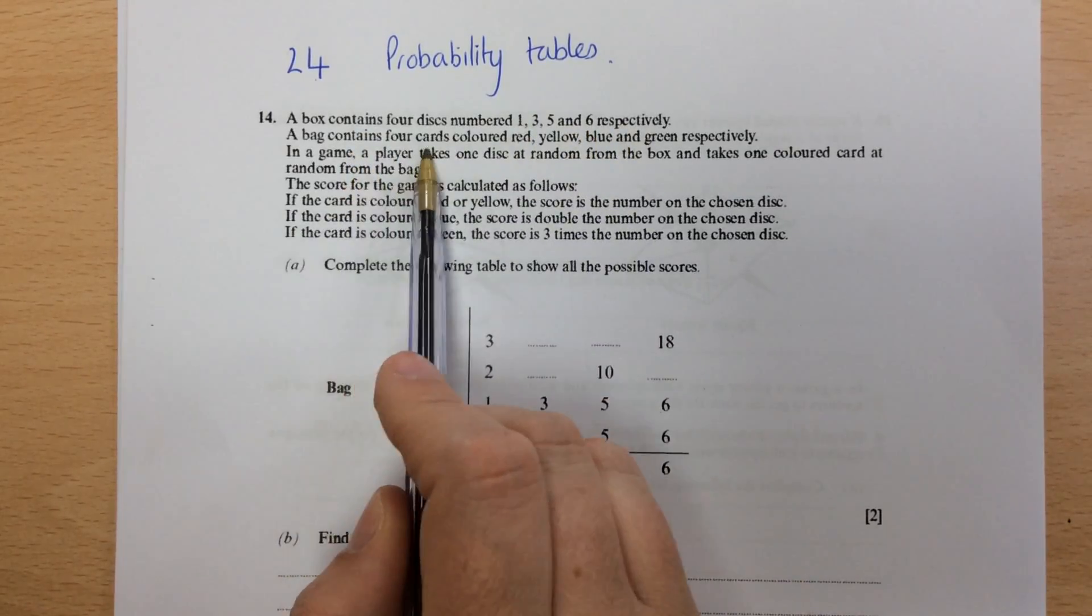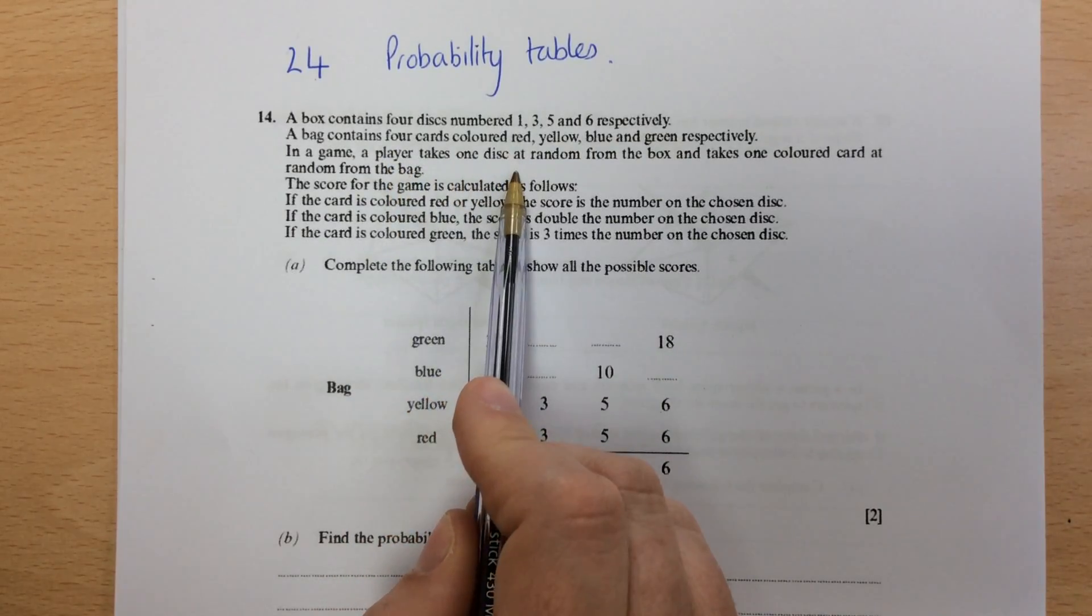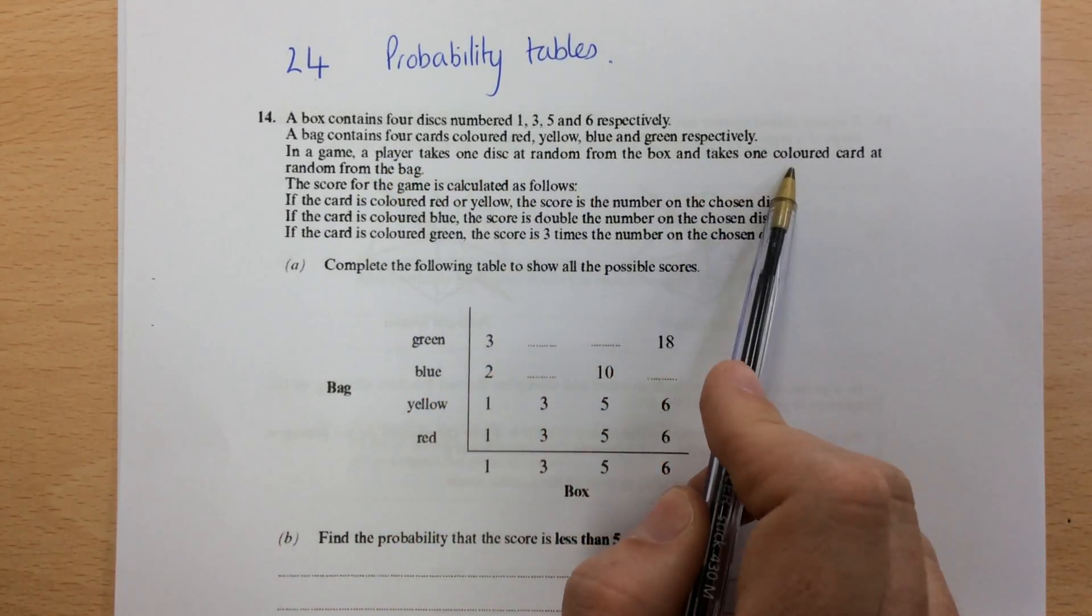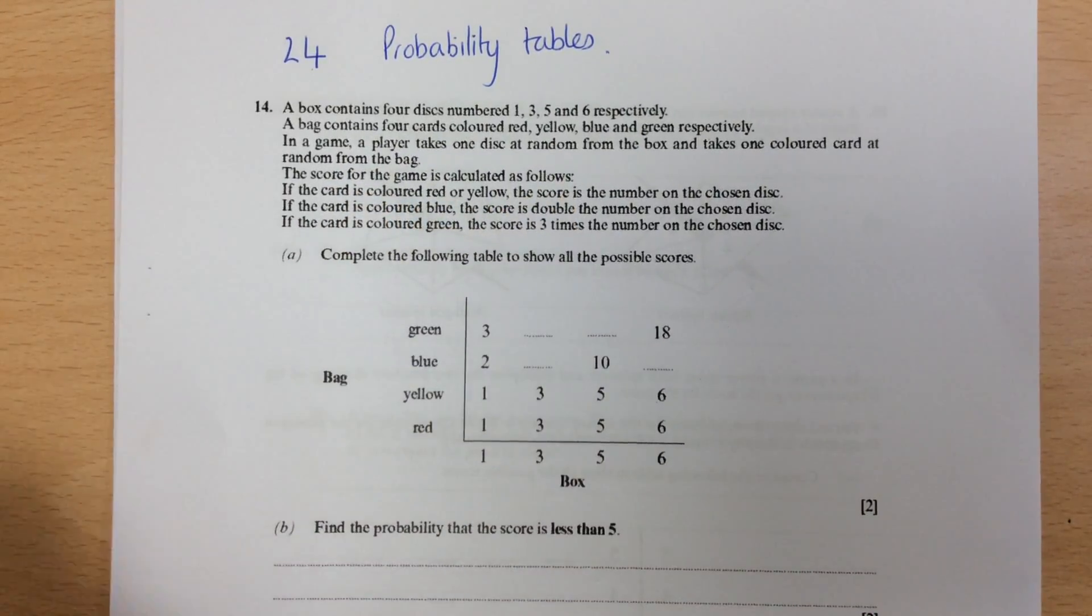And a bag contains four cards: red, yellow, blue and green. In the game, the player takes one disc random from the box and takes one coloured card from the bag. The score for the game is calculated as follows.